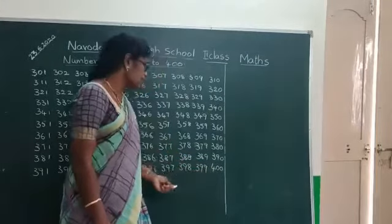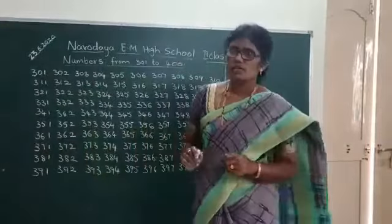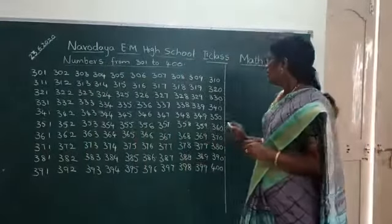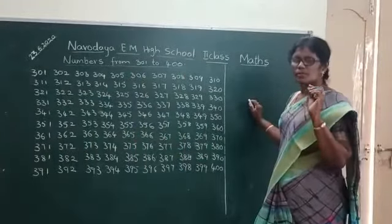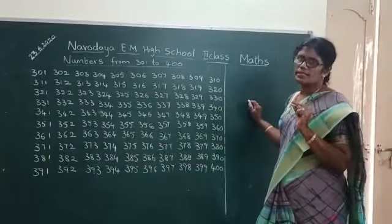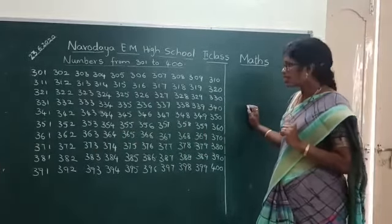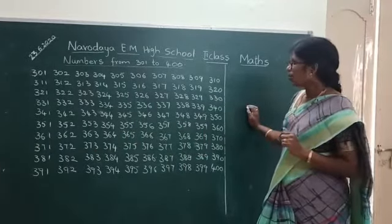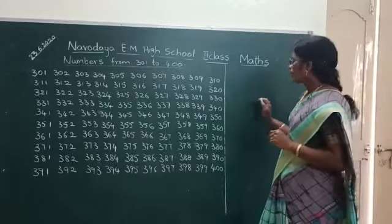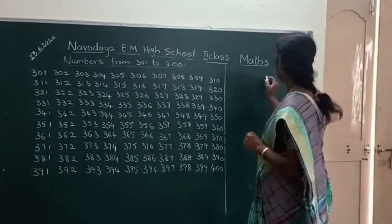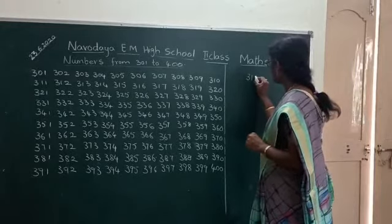Okay children, now in previous classes also, I will explain some small technique: how to write the next number. First children, remember, once again I will explain. Okay, suppose 310 is there.